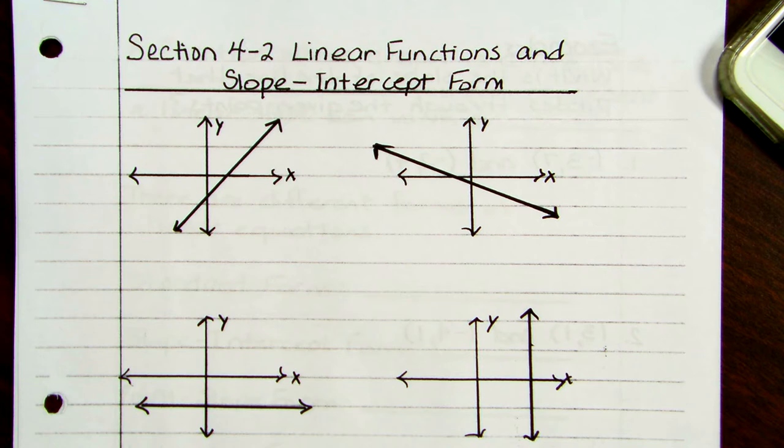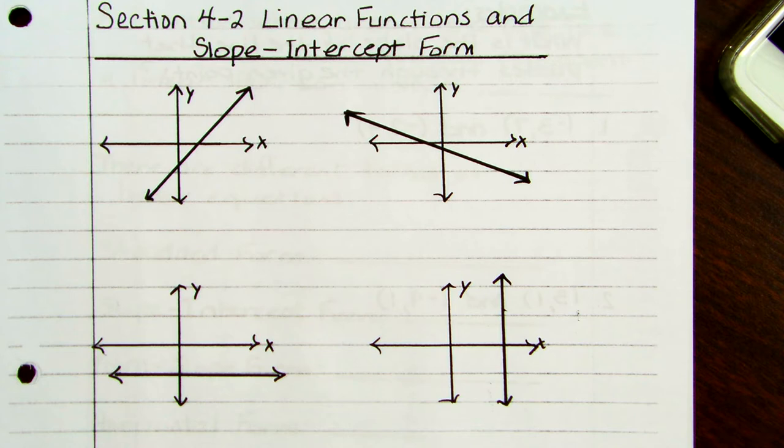Today we're going to look at section 4.2, which is linear functions and slope-intercept form. I have four lines graphed at the top of the page, and we're going to discuss these.